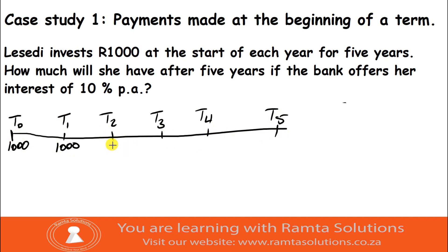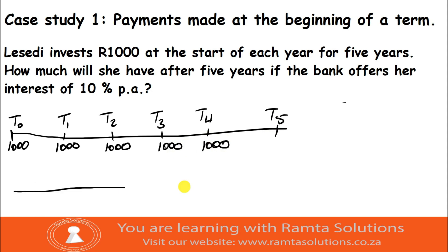At the start of the third year she is still investing a thousand rand. At the start of the fourth year she is investing a thousand rand. And at the start of the fifth year she is also investing a thousand rand. Remember the interest that the bank gives her is ten percent per annum.